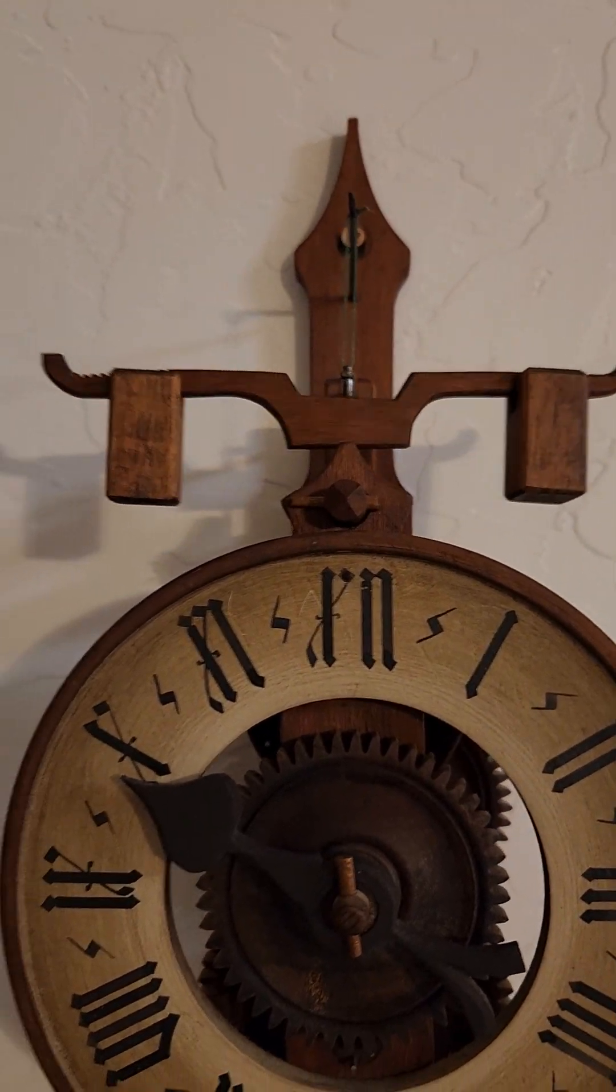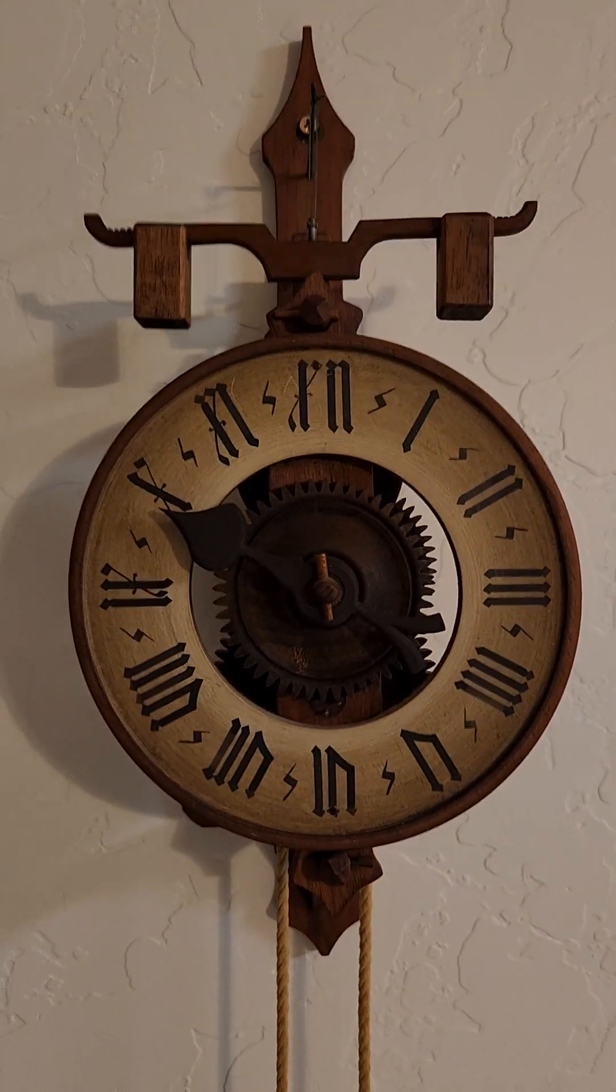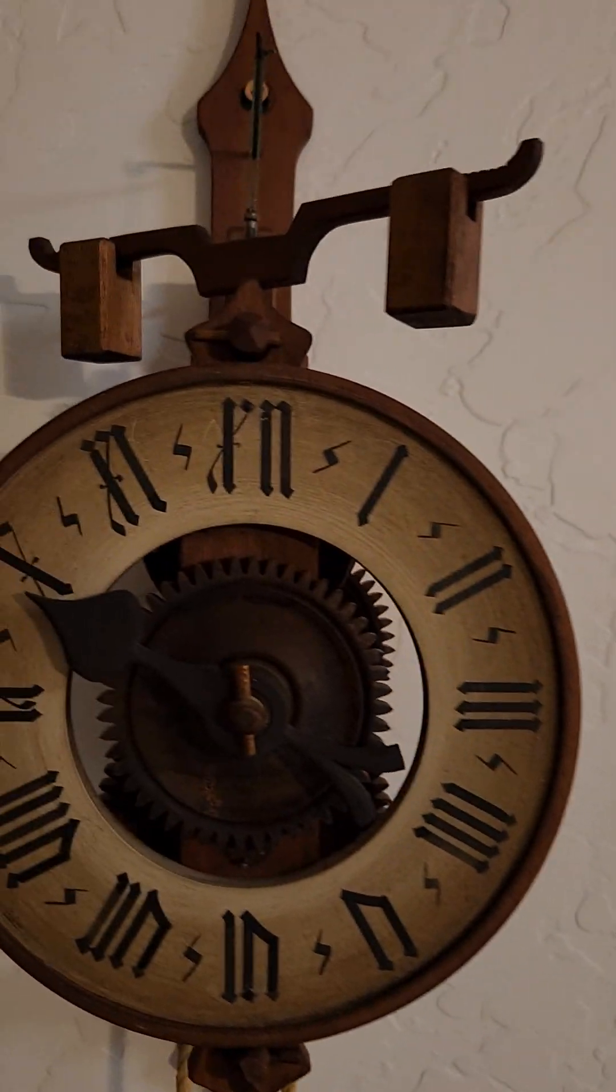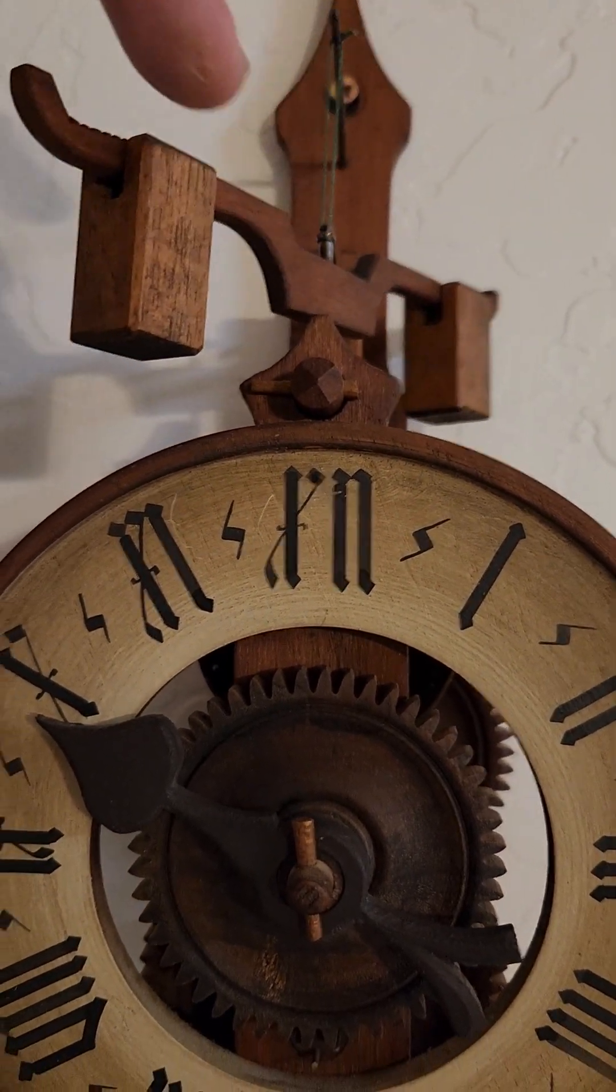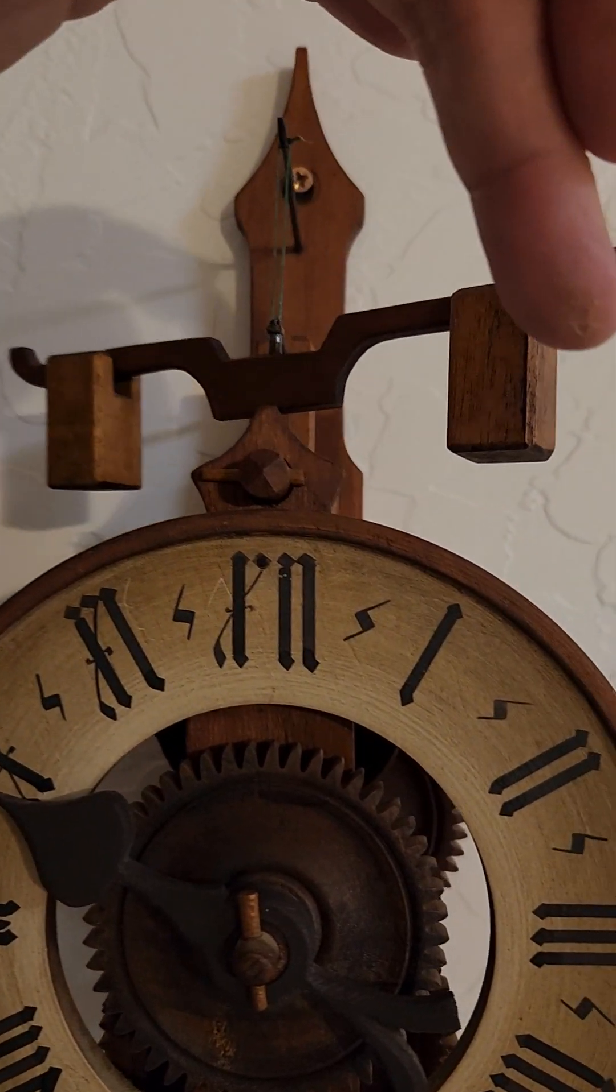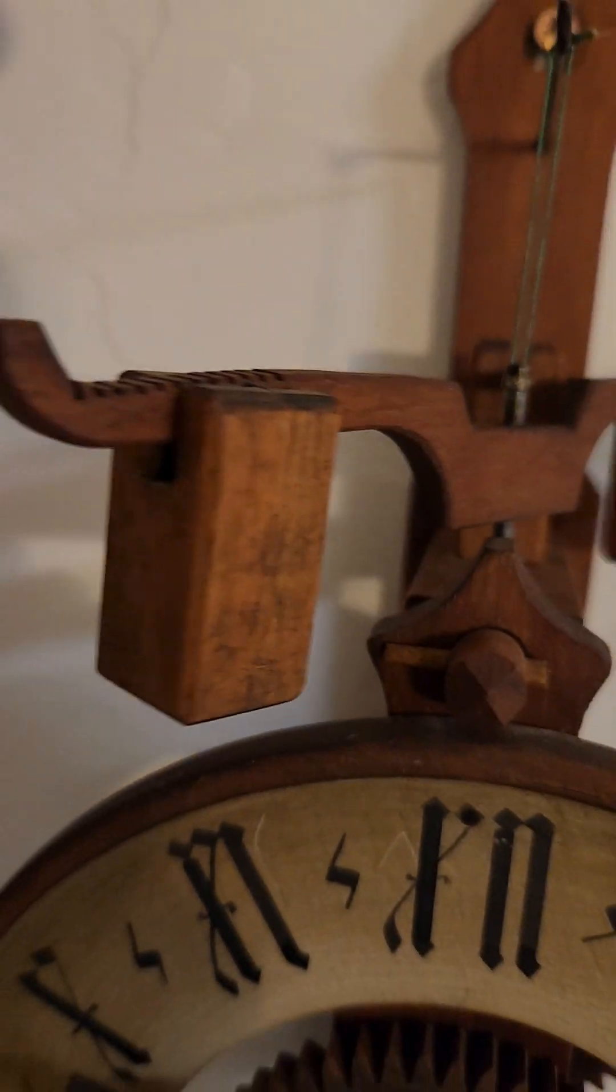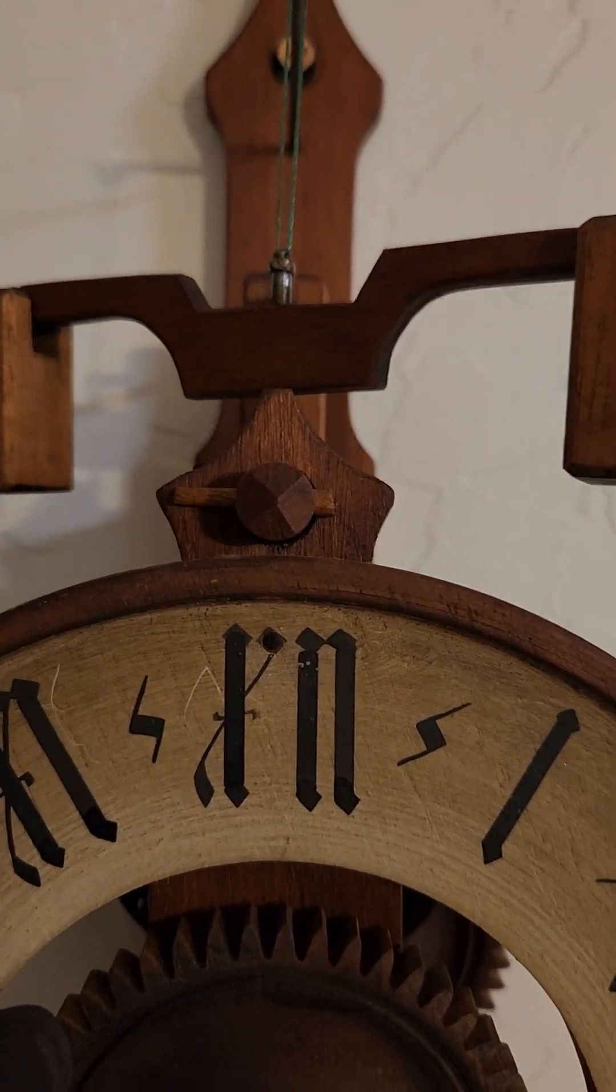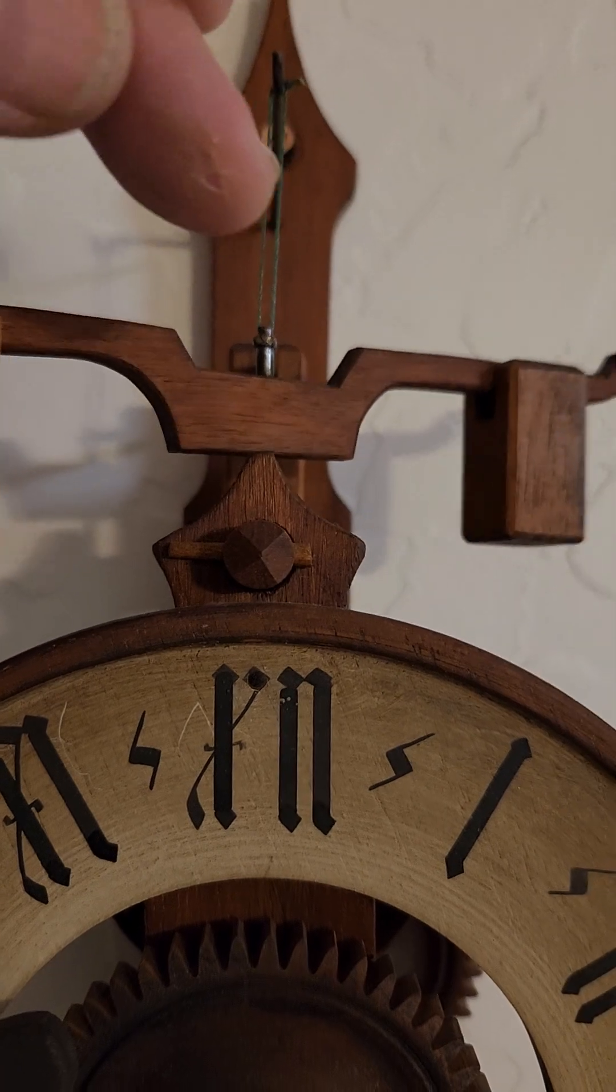Now, if you've ever seen a 400-day or so-called anniversary clock, then you'll recognize immediately what you're seeing here. It is precisely that mechanism, just a little bit less refined. So this ends up being a torsion pendulum. And the weight here, the distance from the center, you can see the little notches that are used to adjust the position of the weight. And therefore, what's called the moment of inertia. These are exactly the same thing you find in a torsion clock.